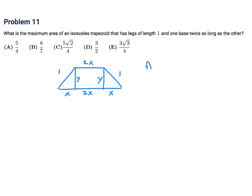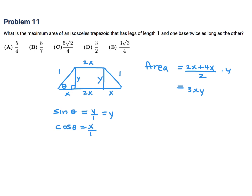Using the area of a trapezoid formula, that's going to be the top plus the bottom divided by 2 times the height, which gives us 3xy. Then using trigonometry, since we have a right triangle, the sine of theta equals y over 1, which is just y, and the cosine of theta equals x over 1, which is just x. So the area becomes 3 cos(θ) sin(θ).